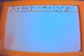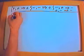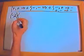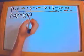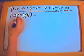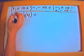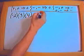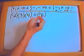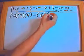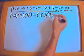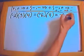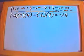Let's do a couple more numerical problems. We have negative 2 times 3 times 4. Two times 3 is 6; it's a negative times a positive so it's negative 6. Carry through the multiplication times 4: 6 times 4 is 24, and negative times positive is negative 24. That's the answer.